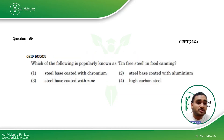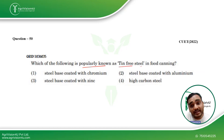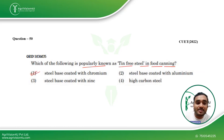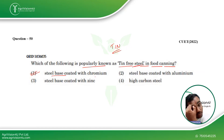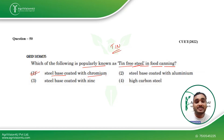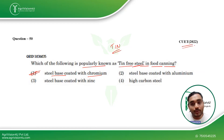Coming to the next question: which of the following is also known as tin free steel in food canning? Steel base coated with chromium — as I explained in class when we were discussing the tin can manufacturing process in the canning chapter. It is called tin free steel because it is a steel base coated with chromium and there is no tin being used. This is the most optimum answer, and this was asked in CUET 2022.